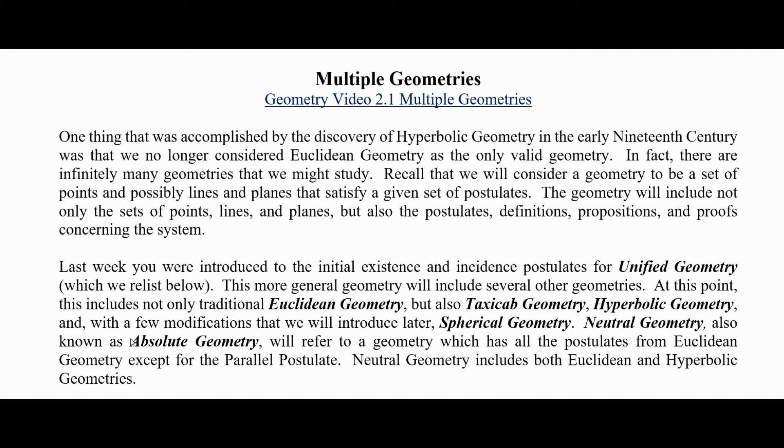Neutral geometry, also known as absolute geometry, will refer to a geometry that has all the postulates from Euclidean geometry, the ones we've introduced so far and the ones we'll introduce later, except for the parallel postulate. Neutral geometry includes both Euclidean and hyperbolic geometries.